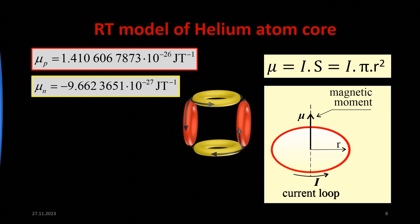Thus, if elementary particles — a proton, a neutron, and an electron — have an experimentally measured magnetic moment, then we can hypothesize that all these elementary particles have the same structure similar to a current loop, where the current is created by the movement of charge along a ring or toroid.